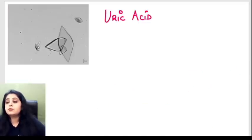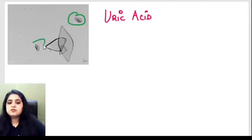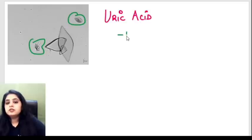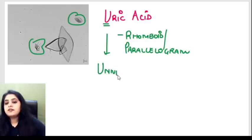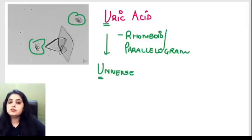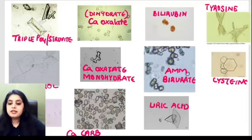The last crystal in this series is the uric acid crystal, the one found in the urine of a patient with gout. It can have many weird shapes: three-sided, convex, rhomboid, parallelogram, or prism shapes. The mnemonic: 'U' for universal — it can have any kind of shape in the universe. So uric acid is the universal crystal.